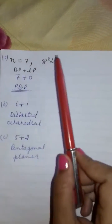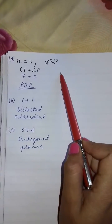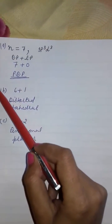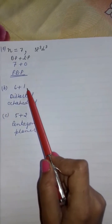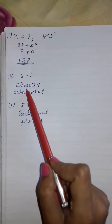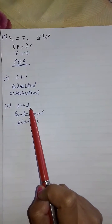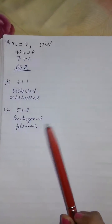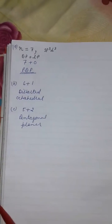If n is equal to 7, then hybridization will be sp3d3 or d3sp3. If bond pairs are 7 and there is no lone pair, then shape will be pentagonal bipyramidal. If bond pairs are 6 and there is one lone pair, then shape will be distorted tetrahedral. If bond pairs are 5 and there are two lone pairs, then shape will be pentagonal planar.